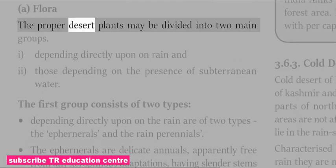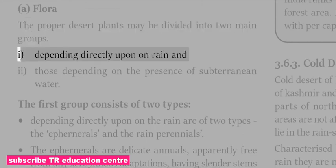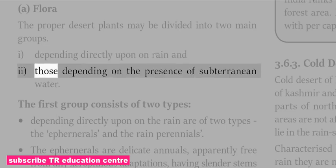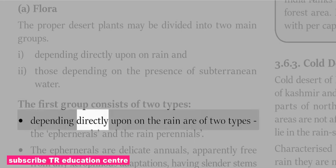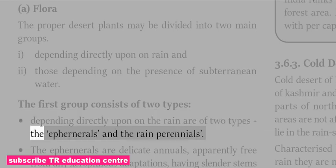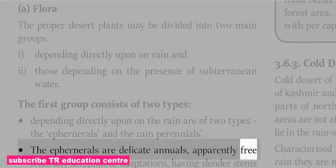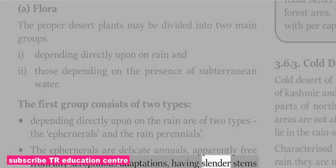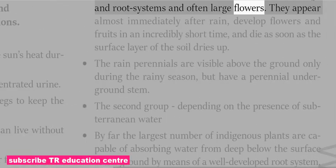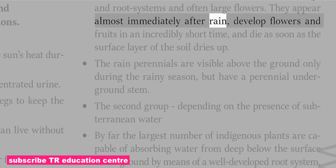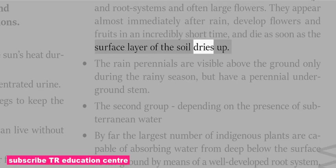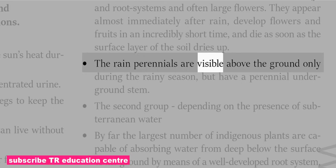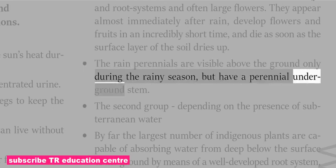The proper desert plants of the Thar may be divided into two main groups: those depending directly upon rain, and those depending on the presence of subterranean water. The first group consists of two types: the ephemerals and the rain perennials. The ephemerals are delicate annuals, apparently free from any xerophilous adaptations, having slender stems and root systems and often large flowers; they appear almost immediately after rain, develop flowers and fruits in an incredibly short time, and die as soon as the surface layer of the soil dries up. The rain perennials are visible above the ground only during the rainy season, but have a perennial underground stem.